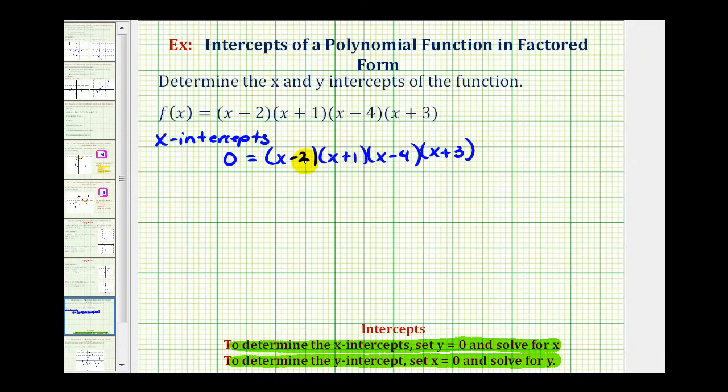So for example, x minus two is equal to zero when x equals two, x plus one is equal to zero when x equals negative one, x minus four is equal to zero when x equals four, and x plus three is equal to zero when x equals negative three. So these x values represent our x intercepts.